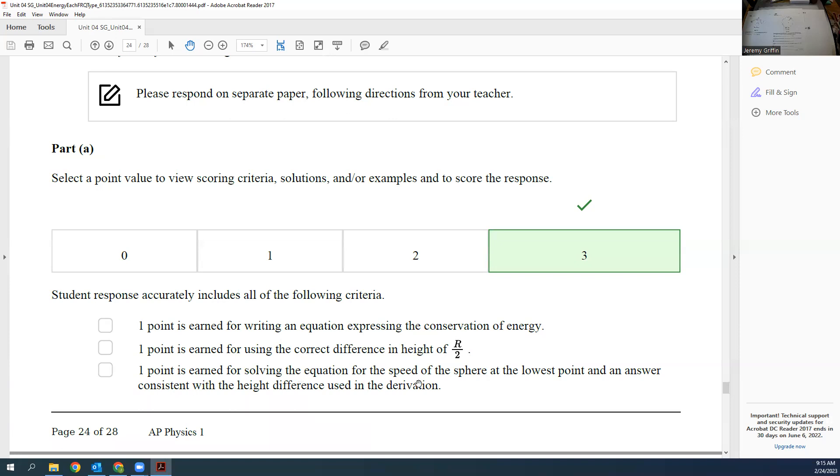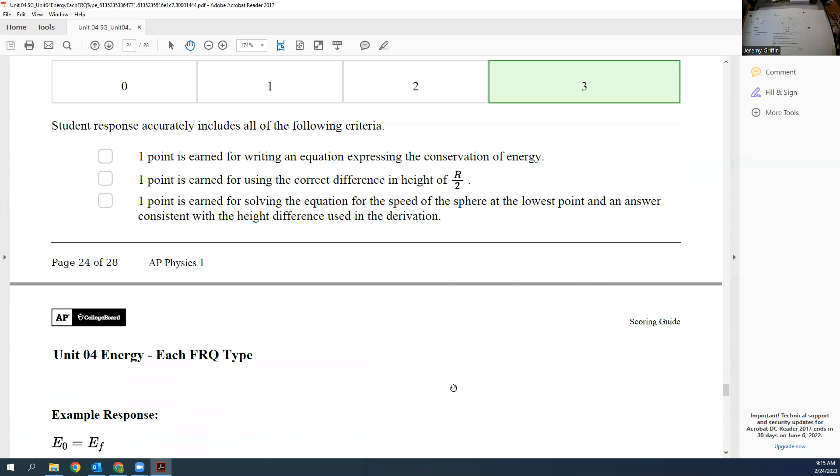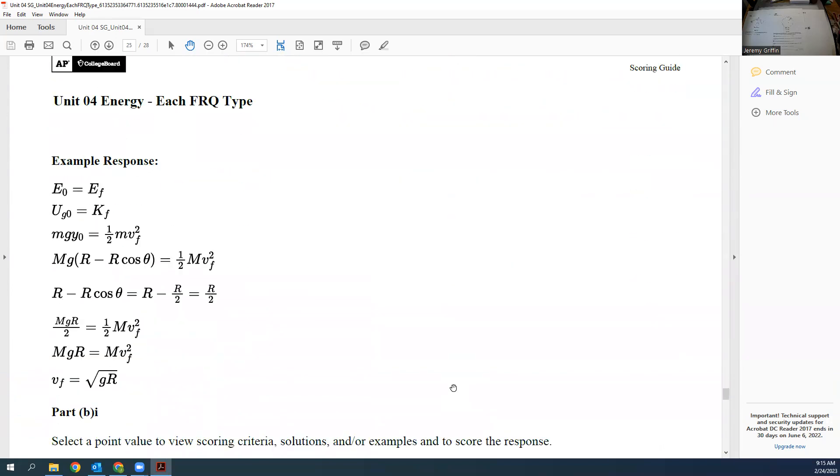At one point for solving equation for the speed at bottom, it should be square root 2gh. Let's see if they got that. Yeah, so square root 2gh. But h was equal to r over 2, so the 2 and the one half cancel. So yeah, square root gr, in terms of the radius of the circle, because the height change was r over 2.